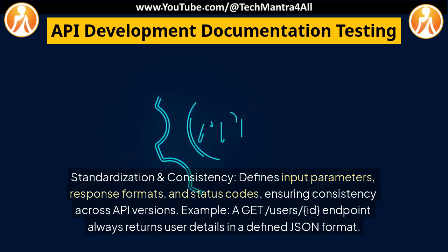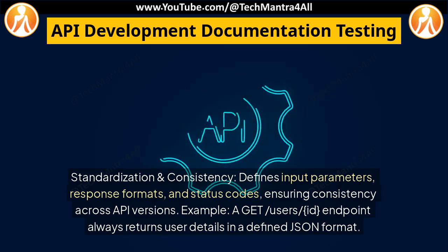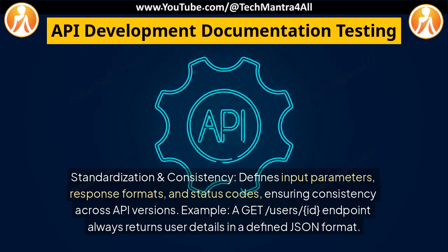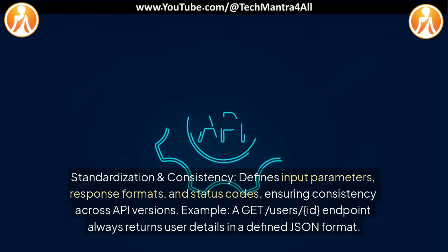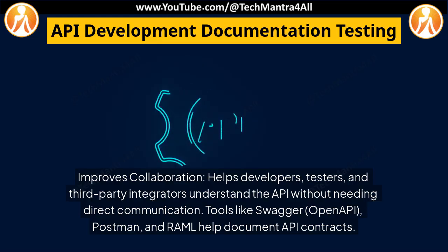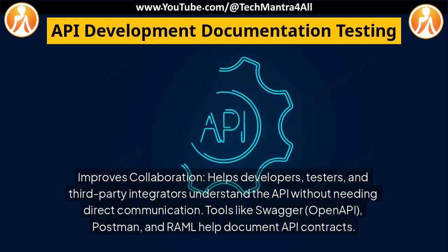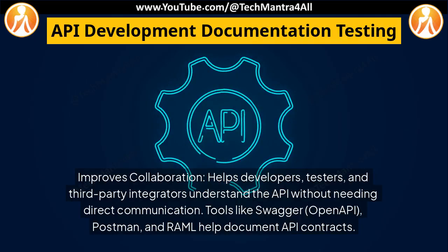Standardization and consistency: defines input parameters, response formats, and status codes, ensuring consistency across API versions. For example, a GET /user/{id} endpoint always returns user details in a defined JSON format. Improves collaboration: helps developers, testers, and third-party integrators understand the API without needing direct communication.